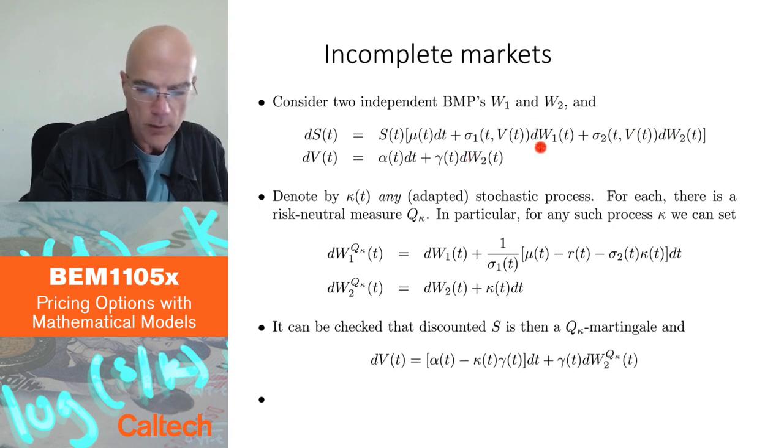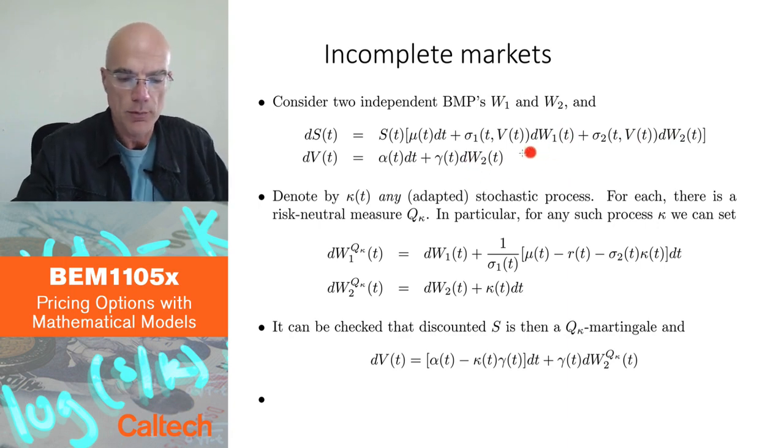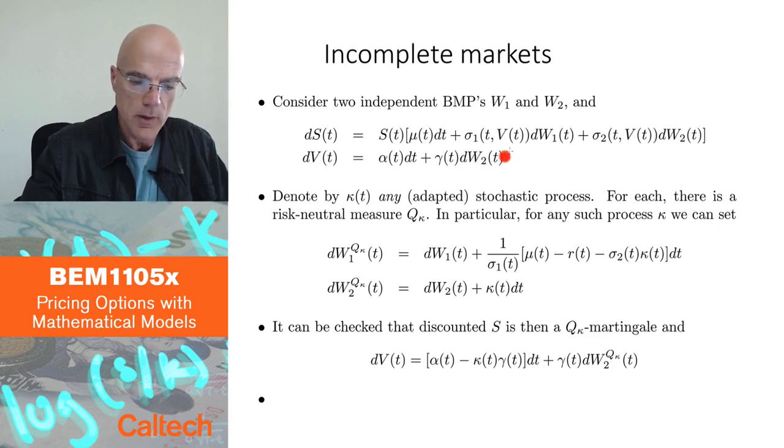I put one in V, I could have done the other way around, it doesn't really matter. I could have put two Brownian motions in V and only one in S.